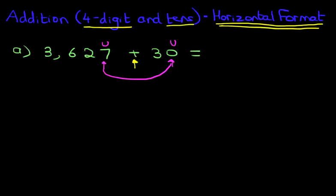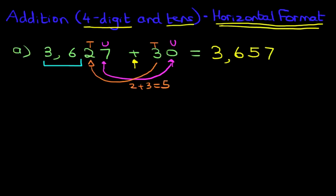Two plus three equals five. As for the thousands and the hundreds, in this example, they will not change. They're going to remain the same. So the answer then becomes 3657. The only digit in this example which has changed is the tens.